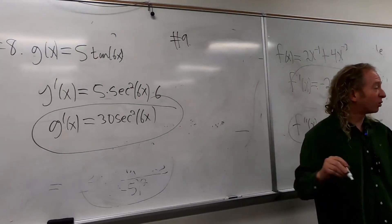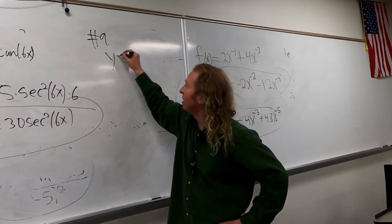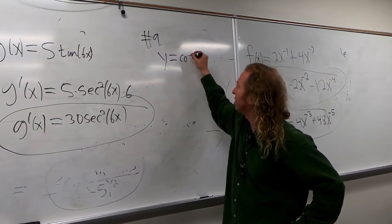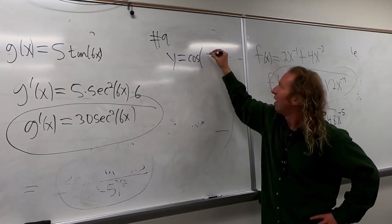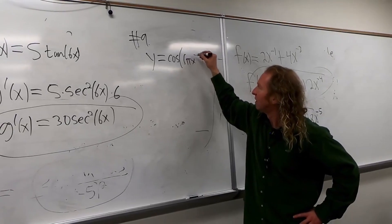Number nine, so it's g of x, no it's y, sorry it's y. Y equals, and it's written kind of funny, it's cosine of pi x to the fifth.